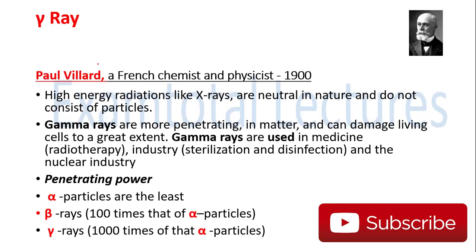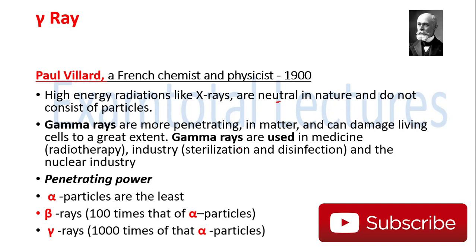Next are the gamma rays, discovered by Paul Villard, a French chemist and physicist, in 1900. Gamma rays are high energy radiations like X-rays and they are neutral in nature — alpha rays are positive, beta rays are negative, but gamma rays are neutral and do not consist of any particle; they are pure rays. Gamma rays have the highest penetrating power of all three, and they can damage living cells to a great extent, making them very harmful to the body.